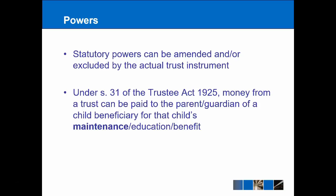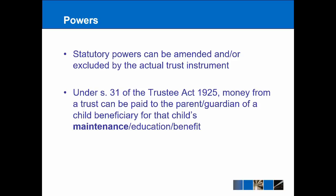Moving on to powers — because these have a lesser status and are essentially optional, they can actually be excluded by the trust instrument. The first is the power of maintenance under section 31 of the Trustee Act 1925; it would certainly be possible for this power to be excluded by the trust instrument. Maintenance means money paid out of the trust to a parent or guardian of a child beneficiary for their maintenance, education, or general benefit — such as school trips or music lessons.